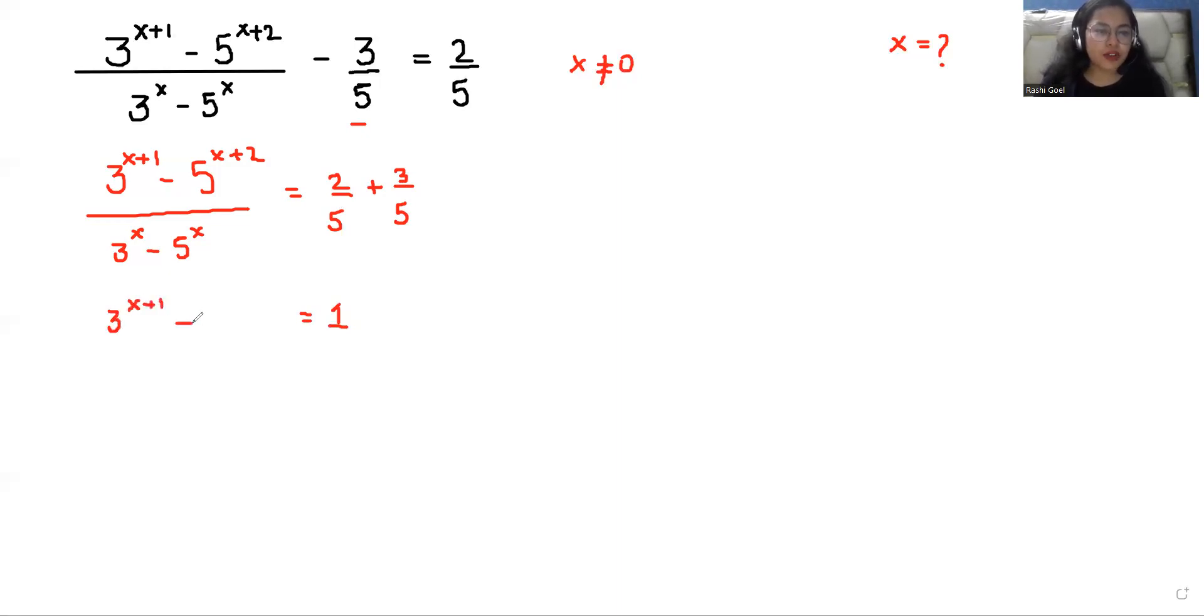3 power x plus 1 minus 5 power x plus 2 over 3 power x minus 5 power x is equals to 1. Now we are going to do the cross multiply.